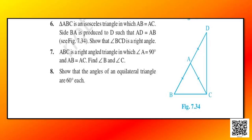Let us discuss question number 6. It says: triangle ABC is an isosceles triangle in which AB is equal to AC. Side BA is produced to D such that AD is equal to AB. The figure is given in your book and the question asks us to show that angle BCD is a right angle. Let me draw the diagram first.